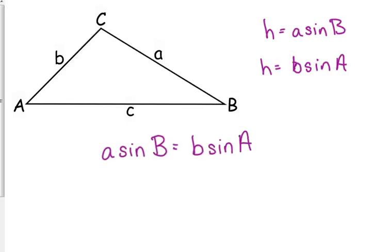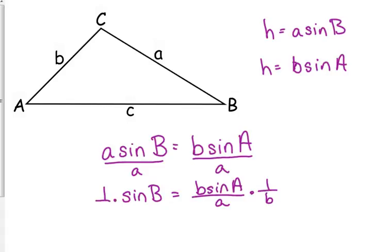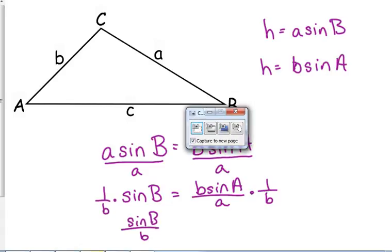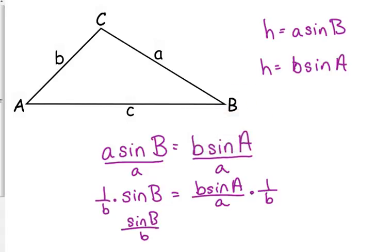If we kind of rearrange this equation so that our letters are on the same sides, if we divide both sides by a, we get the sine of B over a is equal to b sine of A over a. And then if we divide by b, we get the sine of B over little b is equal to the sine of A over little a.